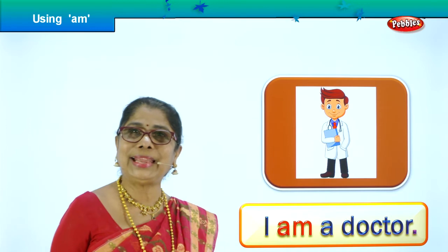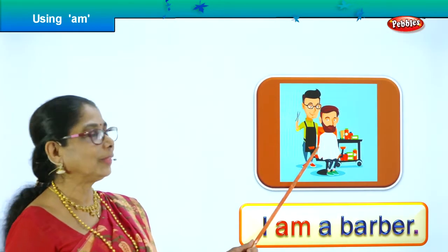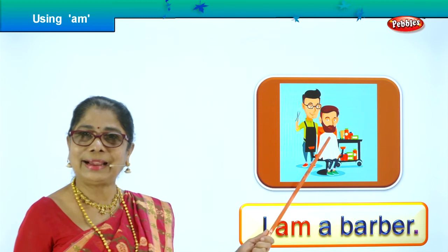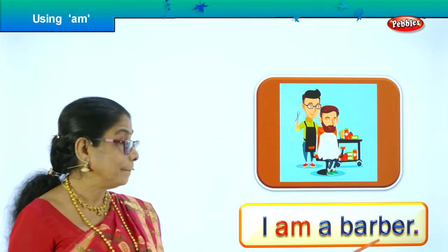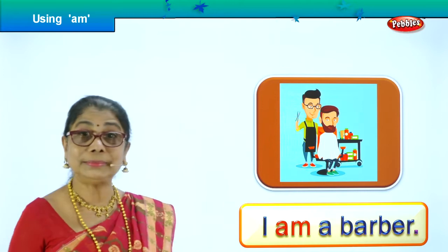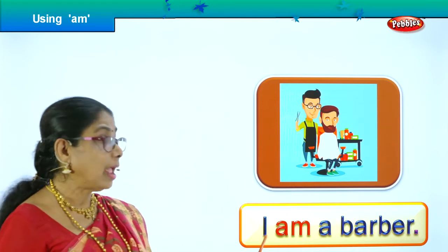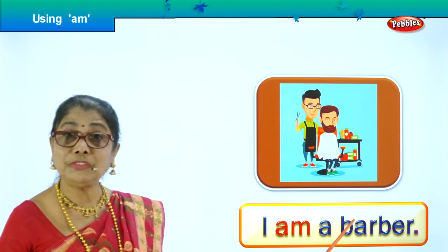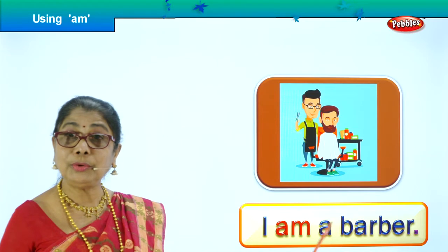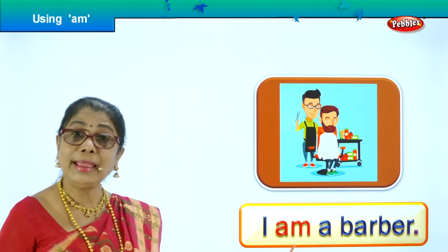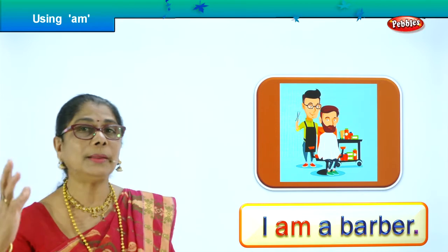Let's get on to our next picture. When dad needs a haircut, when your brother needs a haircut, he goes to a barber. If you go there and say 'Who are you?', he will say: 'I am a barber. I can trim your hair, I can make you look lovely, I can make you look cute.' What does the barber do? Trim your hair.